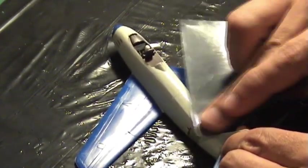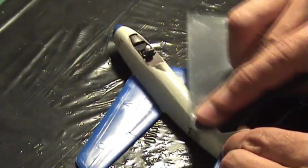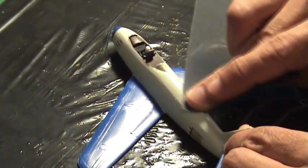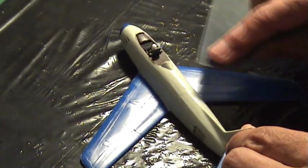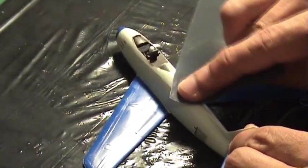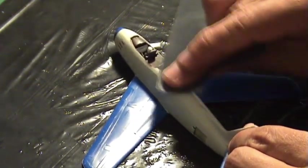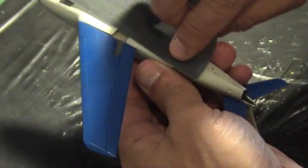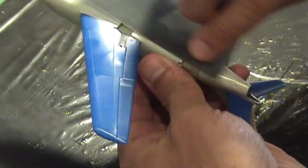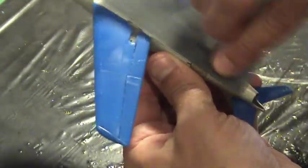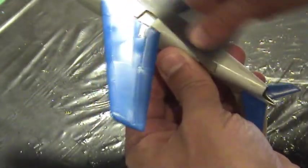It is very important to conceal any imperfections by sanding your model, especially on the plastic seams and joints. Start by using sandpaper with a low grit number and transition to a higher grit sandpaper to even out and polish the surface.